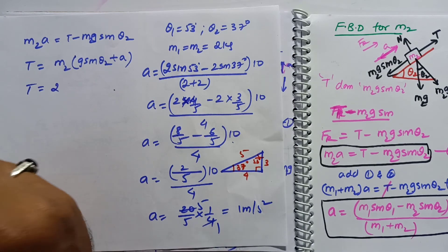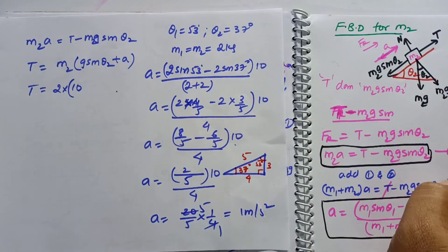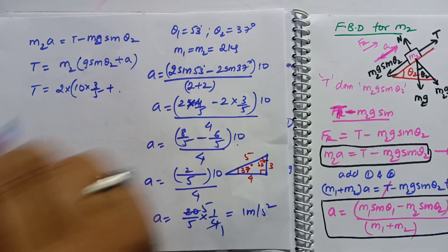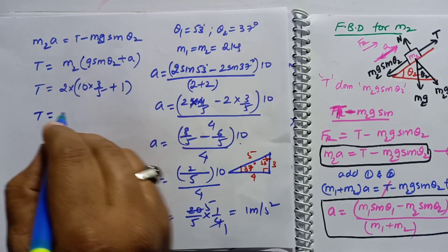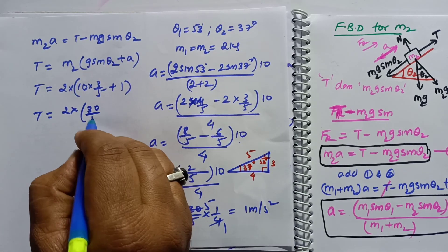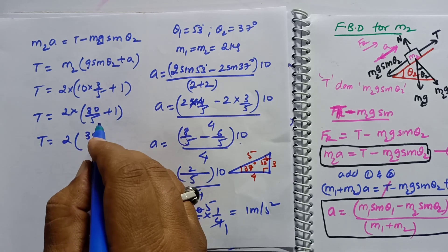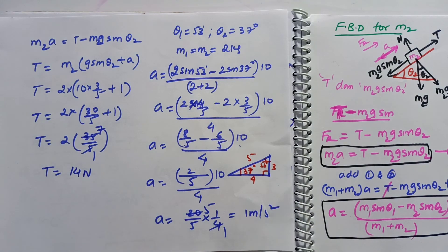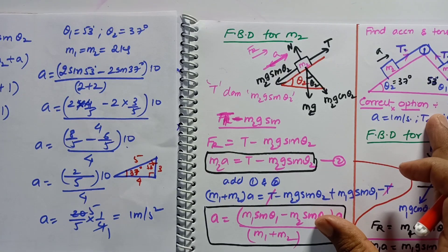Both masses are 2 kg as given. So T = 2 × (6 + 1) = 2 × (30/5 + 5/5) = 2 × 35/5 = 2 × 7 = 14 Newtons. Therefore tension is 14 N, which is the final solution to the problem.